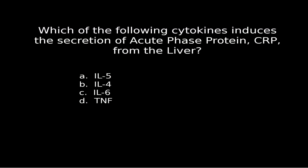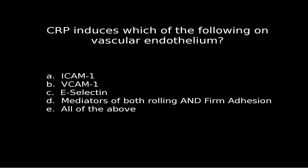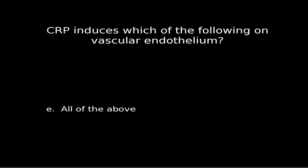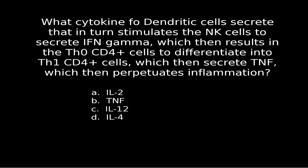Number fourteen: which of the following cytokines induces the secretion of acute phase proteins? The acute phase proteins are going to be your C-reactive protein from the liver — and that's your IL-6. IL-6 also increases ICAM, VCAM, and E-selectin. Number fifteen: C-reactive protein induces which of the following on vascular endothelium? The answer is all of the above. Number sixteen: what cytokines do dendritic cells secrete that in turn stimulate NK cells to secrete interferon gamma, which results in T-naught differentiating into Th1 CD4-positive cells, which then secrete TNF and start this whole cascade? The answer is IL-12, which is going to increase the NK cells.